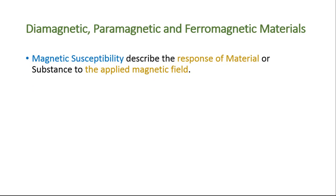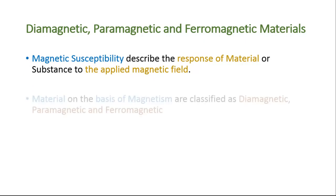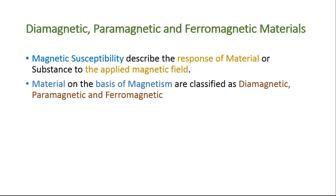Material susceptibility describes the response of a material or substance to the applied magnetic field. Materials on the basis of magnetism are classified as diamagnetic, paramagnetic, and ferromagnetic.